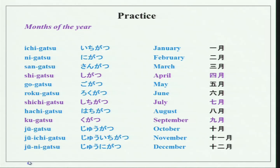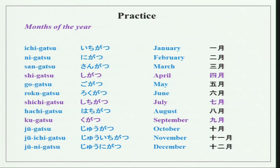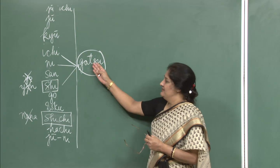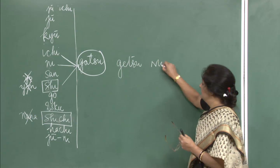Please repeat after me: ichigatsu, nigatsu, sangatsu, shigatsu, gogatsu, rokugatsu, shichigatsu, hachigatsu, kugatsu, juuichigatsu, juunigatsu. These are the twelve months, simply marked by gatsu. Nigatsu means February, ichigatsu means January, and gatsu itself means month.